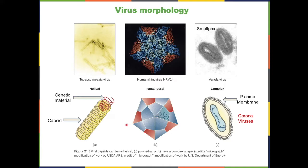Viruses have different morphologies and come in three broad structural categories: helical, icosahedral, and complex. Complex viruses have a plasma membrane enveloping the genetic material, usually derived from the host cell. An example of a helical virus is tobacco mosaic virus, which infects plants. Its genetic material sits inside a capsid — a complex protein structure.